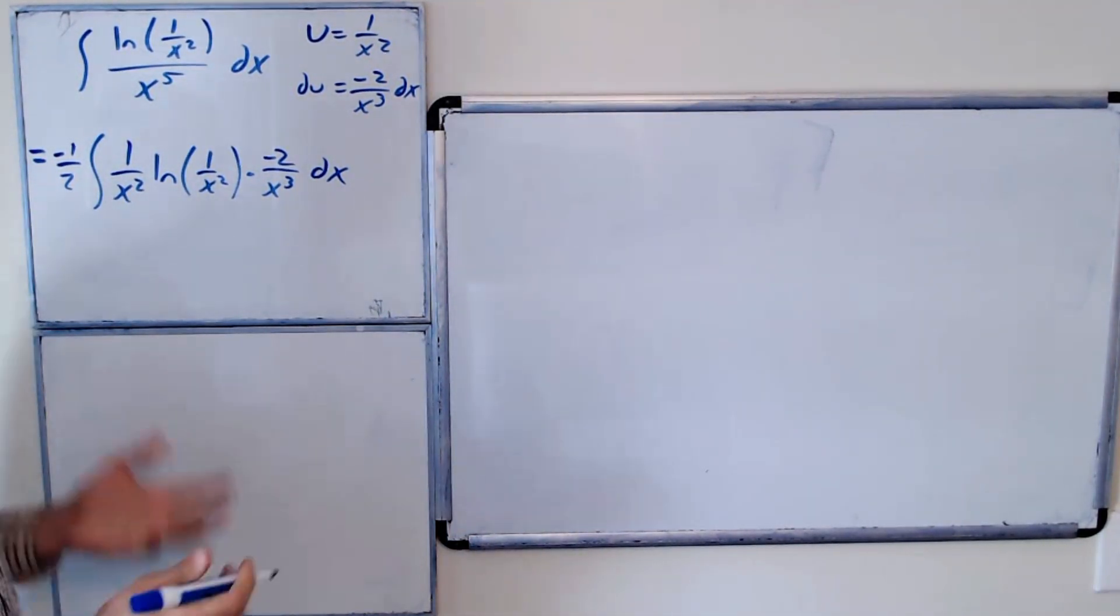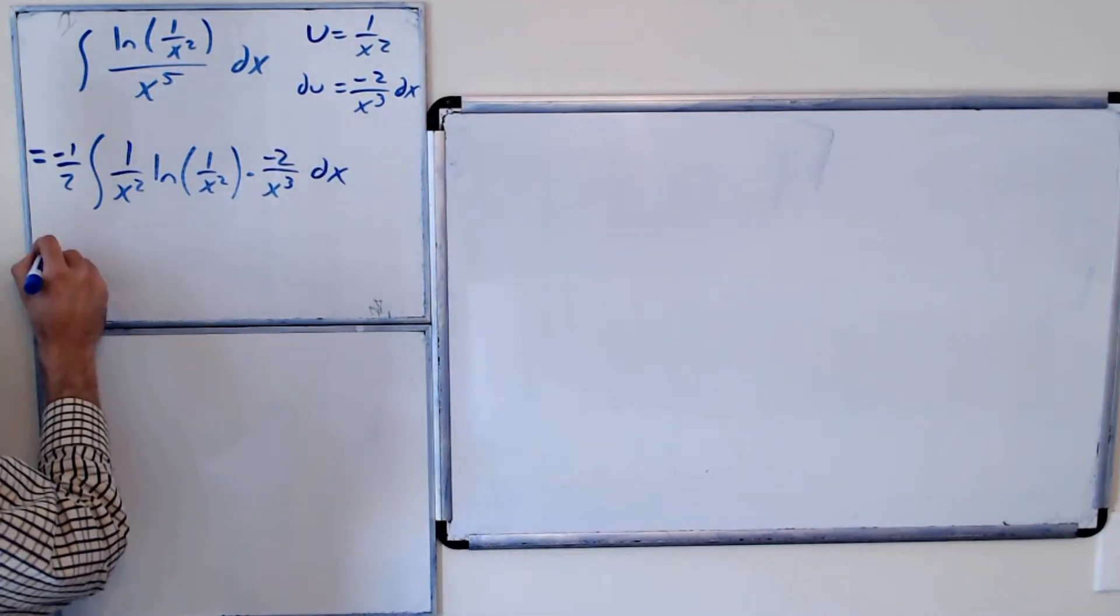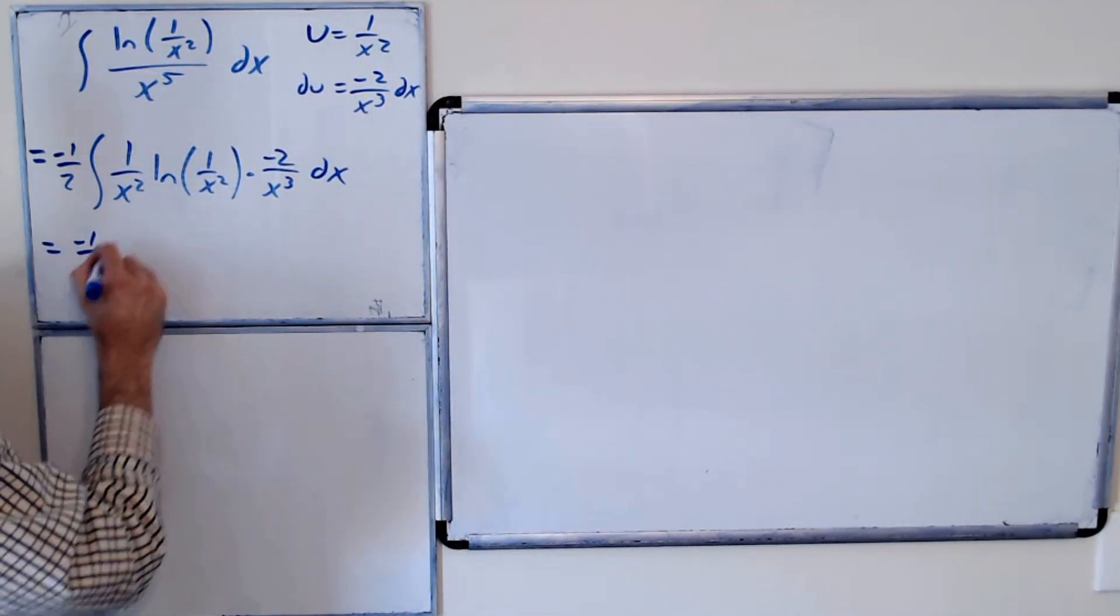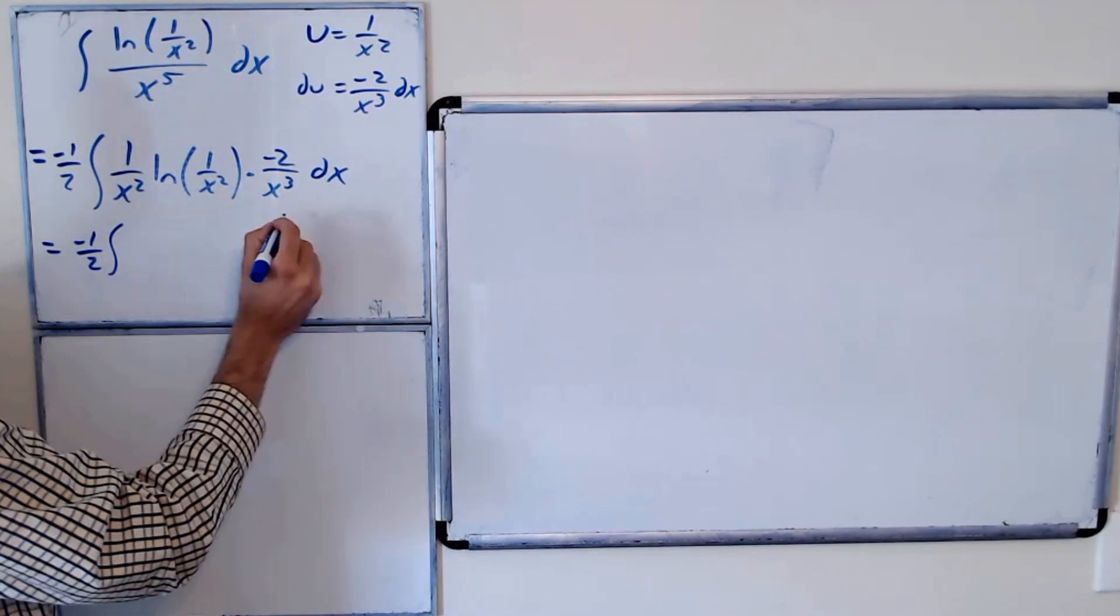Okay, so the integral, when we do the u substitution, is equal to negative 1 half the integral of u ln of u du.